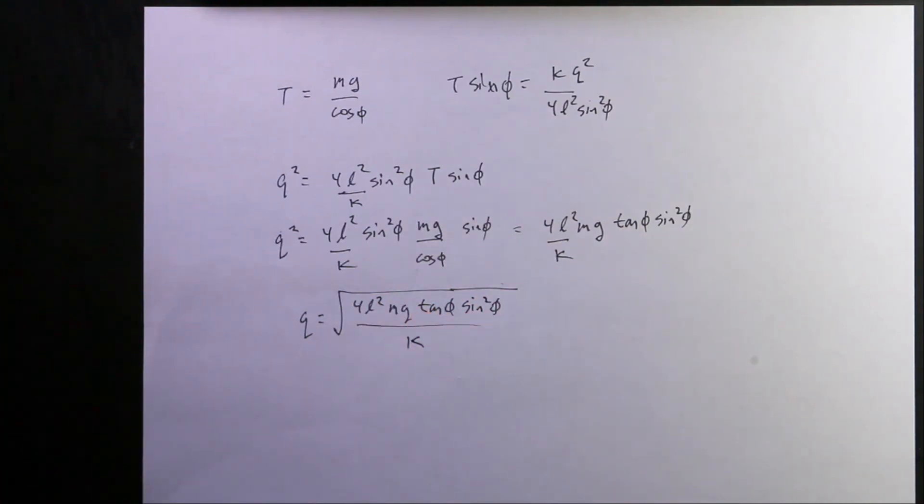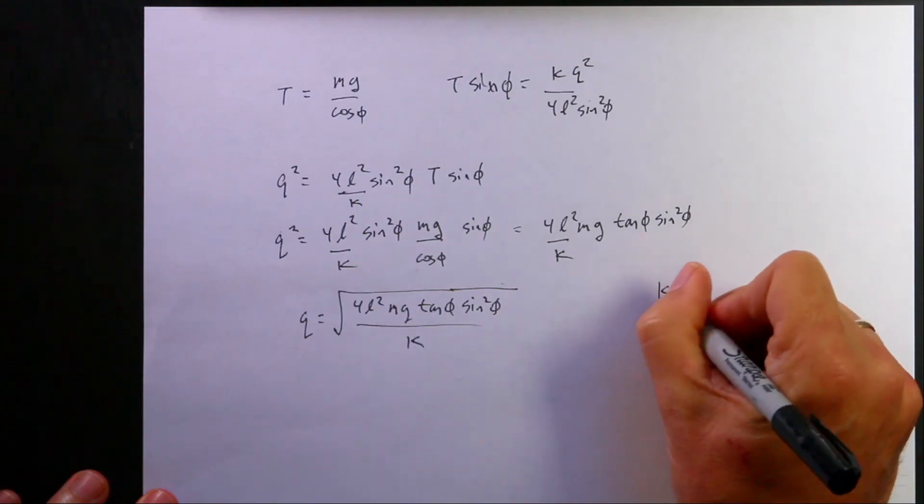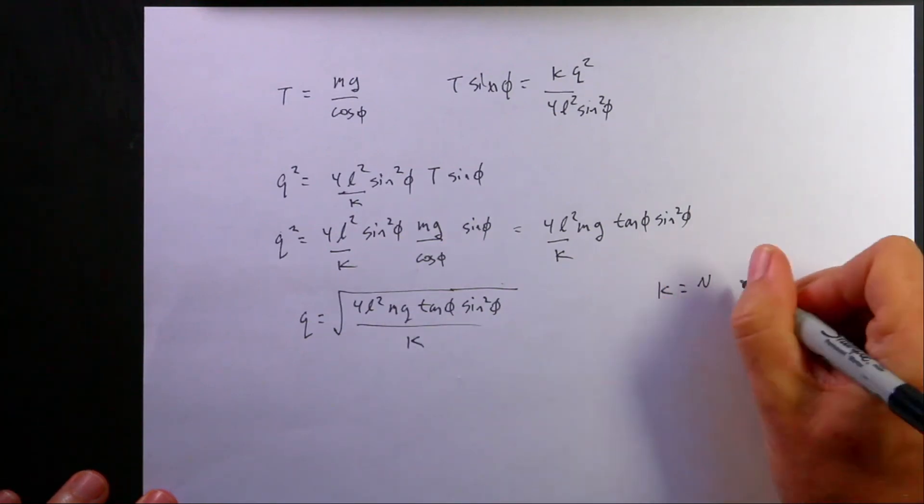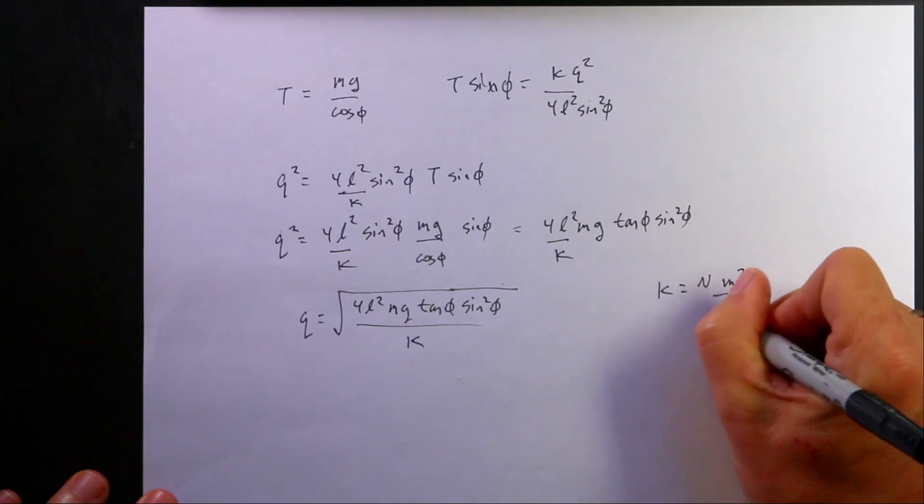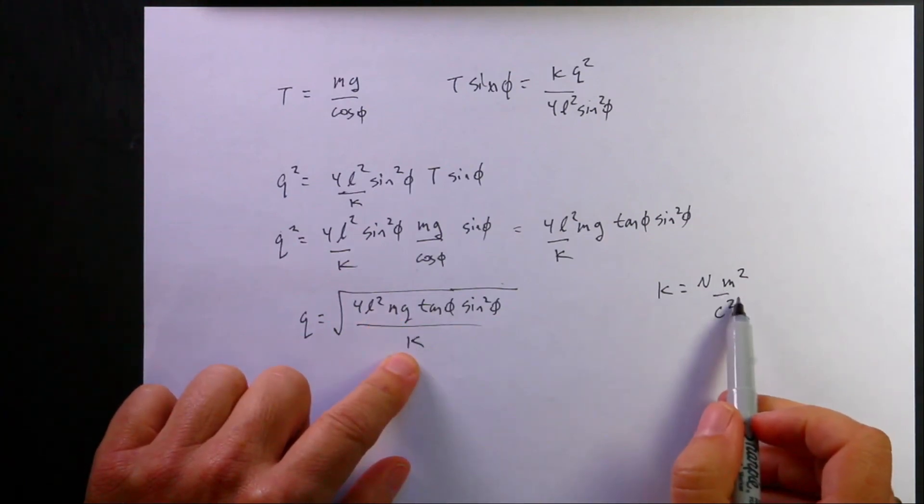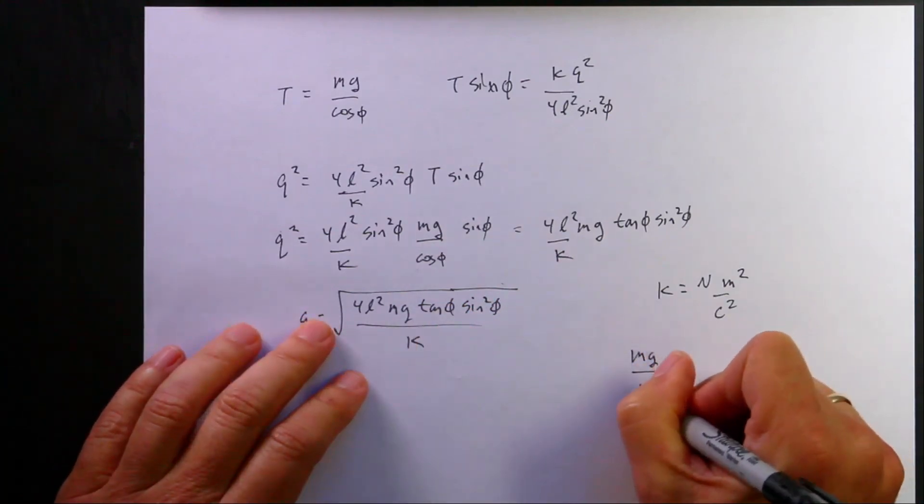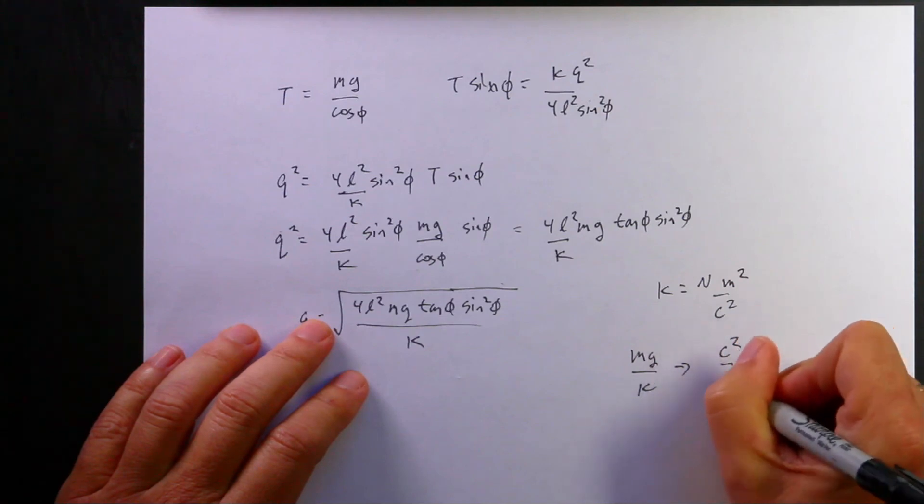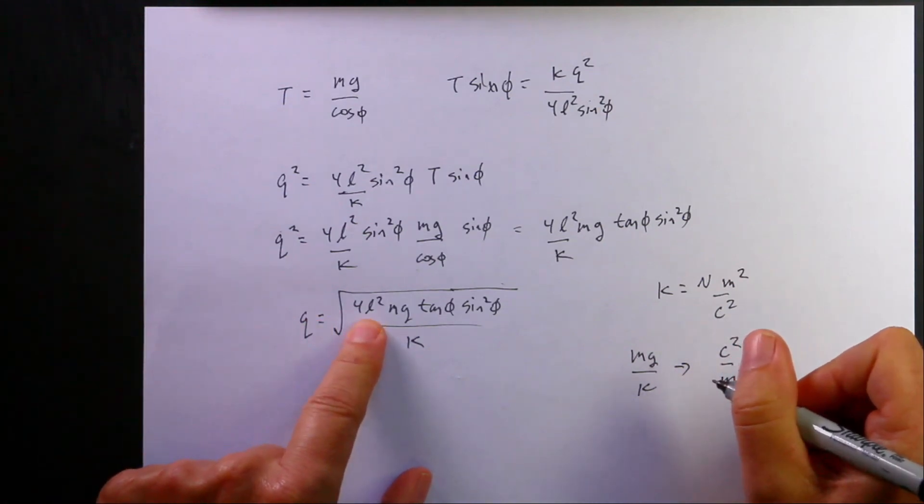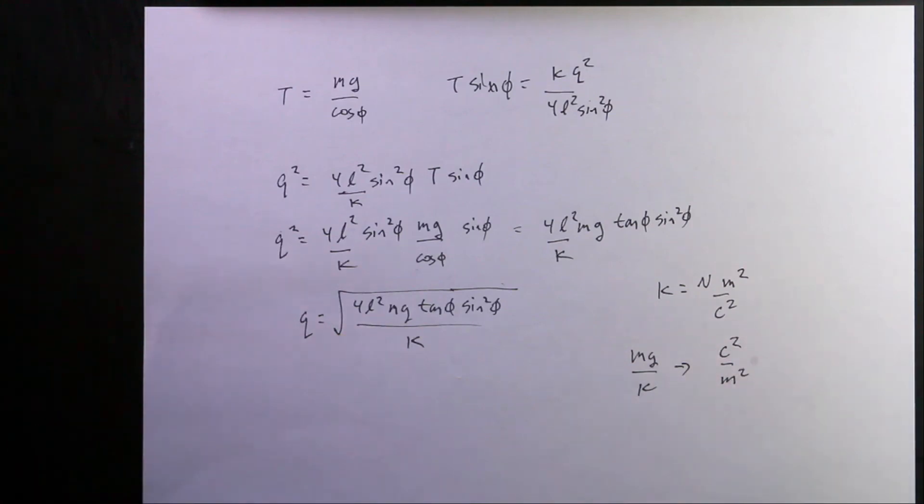Now I feel doubtful about my answer. So let's just check right here. This has units of Newtons. And K has units of Newtons meters squared per Coulomb squared. So if I take Newtons divided by this, I get Coulomb squared per meters squared for just this part right there. So Mg over K gives me Coulomb squared per meters squared. Now if I multiply that by L squared, the meter squared cancels. So that's good. I get Coulomb squared. Tangent and sine have no units. And then I take the square root and I get Coulomb. So at least it has the right units.